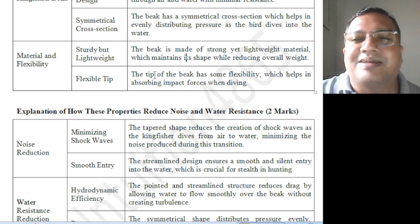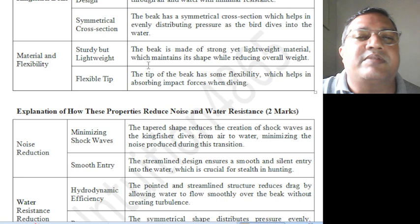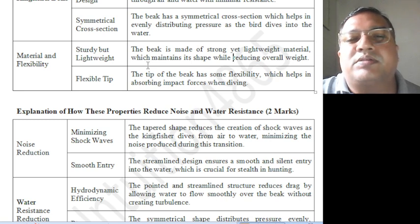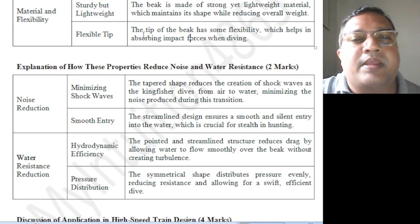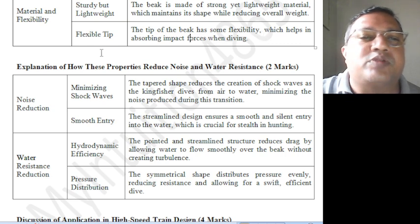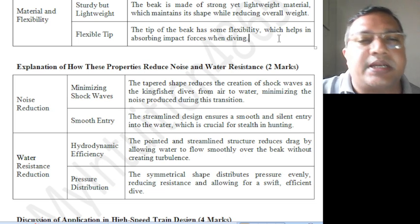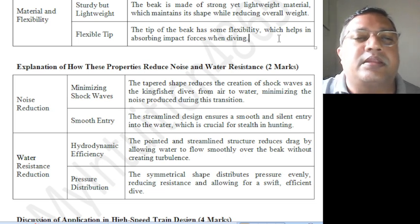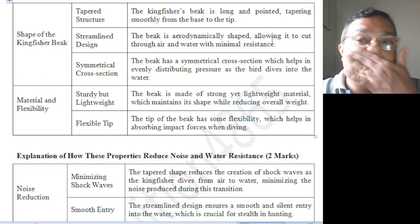The beak is made of strong but very lightweight material — not made by someone, but naturally so. This strong, lightweight material maintains its shape while reducing overall weight, which is what can be adopted. The tip of the beak has some flexibility which helps in absorbing impact force when diving. These are observations done on studying the kingfisher's beak and the physics of its nature.